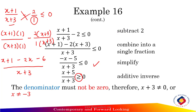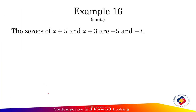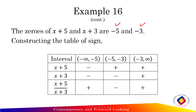The denominator must not be zero, therefore x plus 3 cannot equal zero, meaning x cannot be negative 3. Next, find the zeros for each numerator and denominator: the zeros are negative 5 and negative 3. Constructing the table of sign, since our zeros are negative 5 and negative 3, the intervals are negative infinity to negative 5, negative 5 to negative 3, and negative 3 to positive infinity.